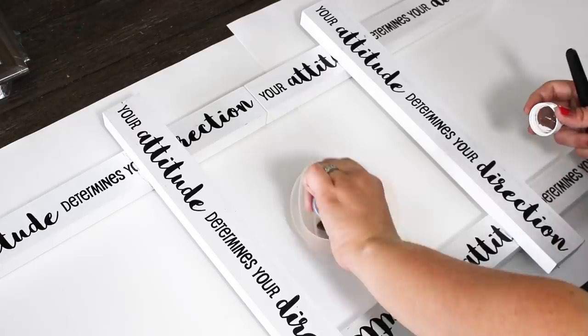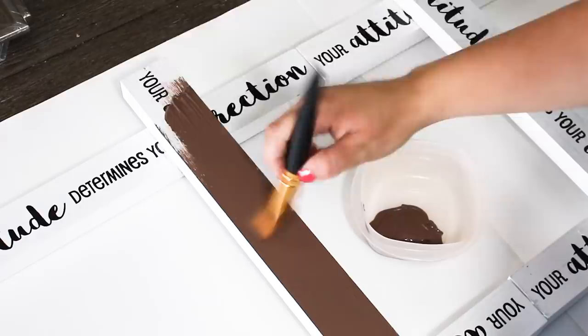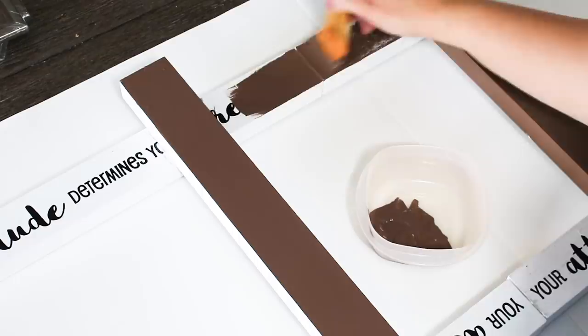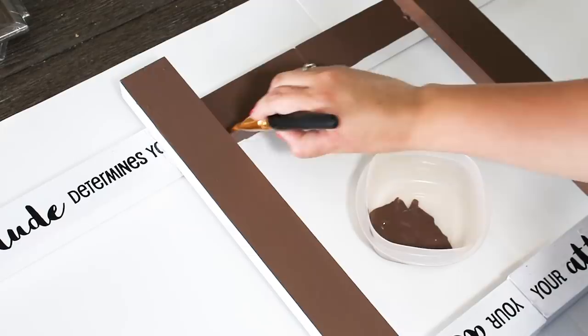I wanted to give my ladder a faux more natural wood color, so I am painting mine in the Waverly chalk paint color truffle. But I also think this ladder would be so pretty in white or maybe a light gray and then dry brushing on top of that.